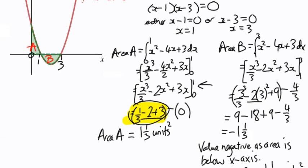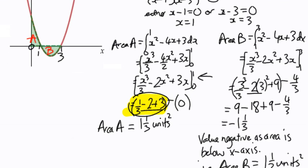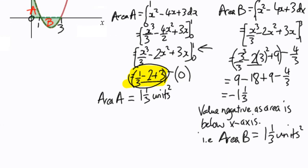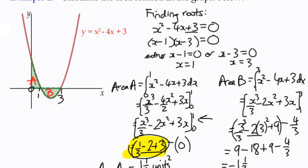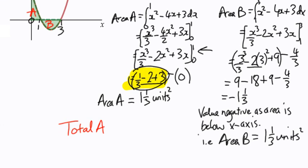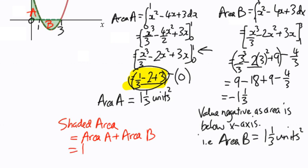In actual fact, they're the same area. A is 1 and 1 third units, B is 1 and 1 third units. So the final answer, the shaded area, we're just going to add these two together: 1 and a third plus 1 and 1 third, which is 2 and 2 thirds square units.